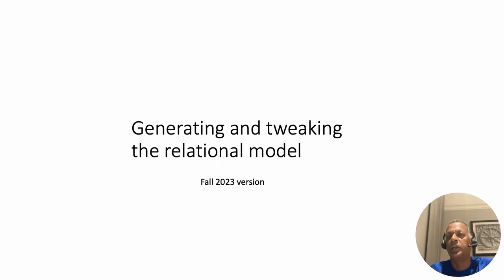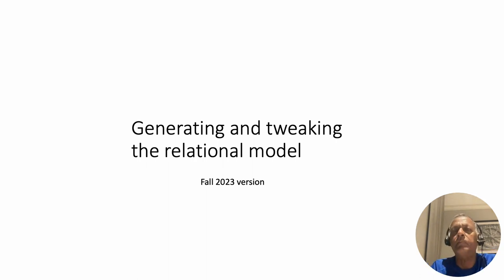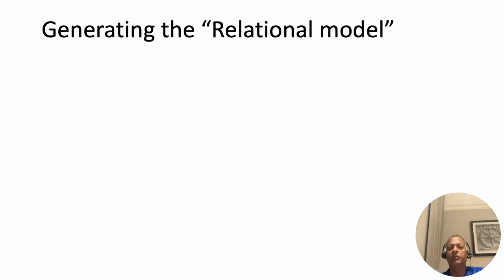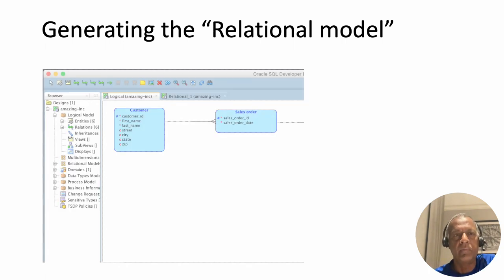The process is: we have the logical model and we want to generate the SQL scripts, but before we do that we will create something called the relational model from the logical model. Then we'll do a few small things within the relational model and then generate the SQL. Think of the relational model as an intermediate step before we generate the SQL to put into Apex for creating the tables.